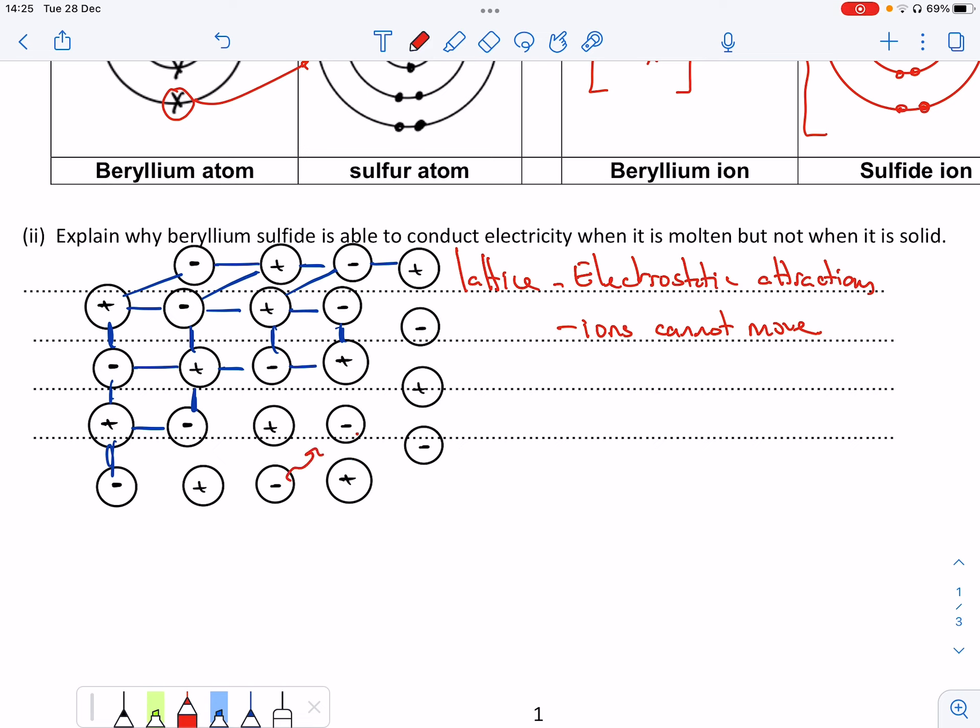the attractions, these ions are then free to move wherever they want. And when the ions can move, then they will carry charge and it will conduct electricity. So when it's in its molten state, then the ions are free